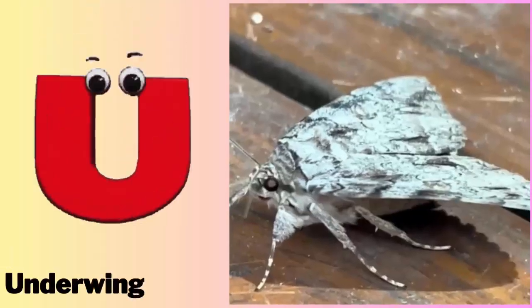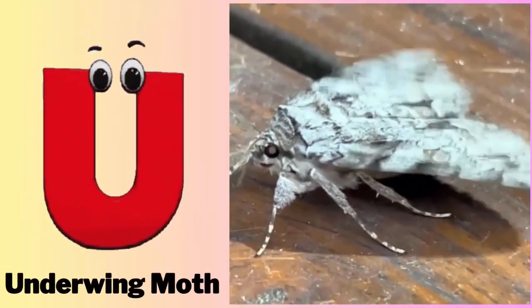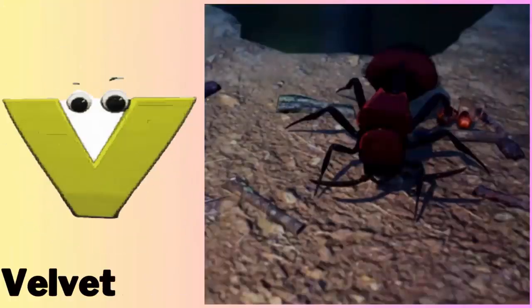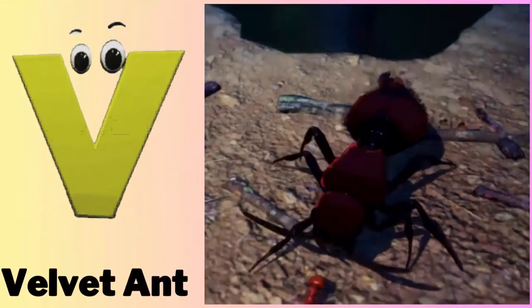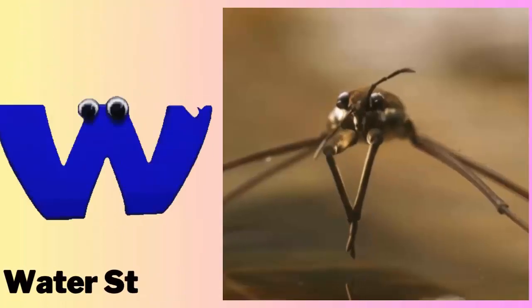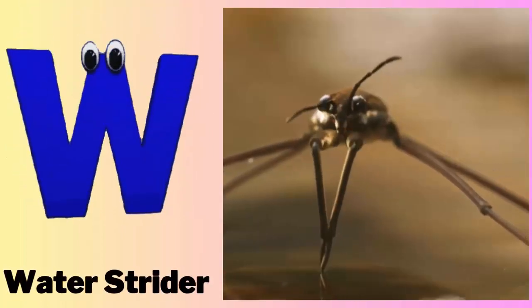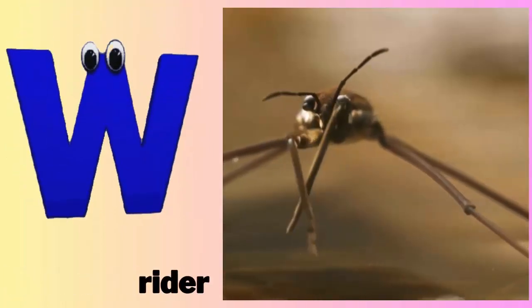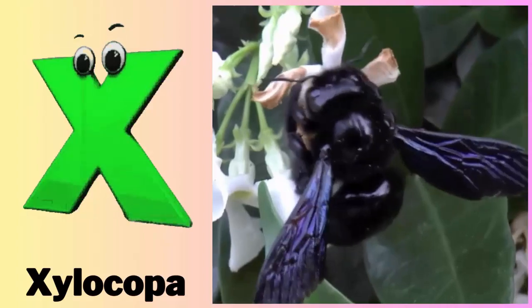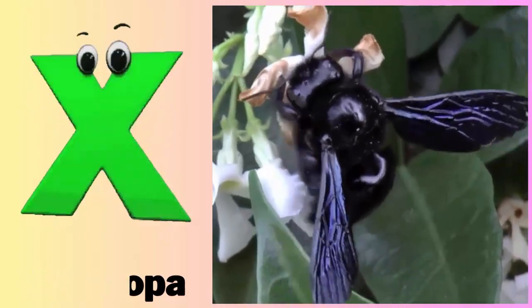U - U for Underwing Moth. V - V for Velvet Ant. W - W for Water Strider. X - X for Xylocopa.